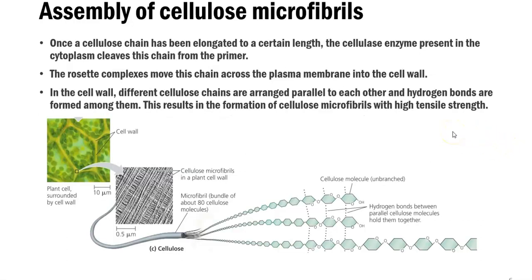Now we look at the steps involved in the assembly of the cellulose microfibril. Once a cellulose chain has been elongated to a certain length, the cellulase enzyme in the cytoplasm cleaves this chain from the primer molecule. The rosette complex proteins in the plasma membrane then move this chain across the plasma membrane into the cell wall, where it gets polymerized into the cellulose molecule. In the cell wall, different cellulose chains are arranged parallel to each other, hydrogen bonds form among them, and this results in the cellulose microfibril structure, giving high tensile strength.